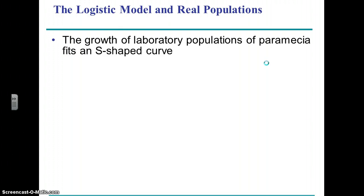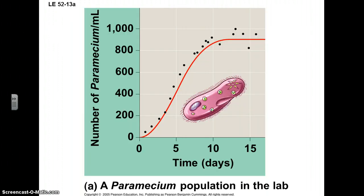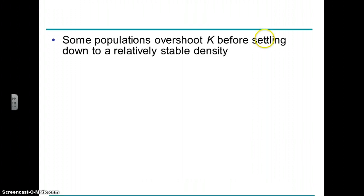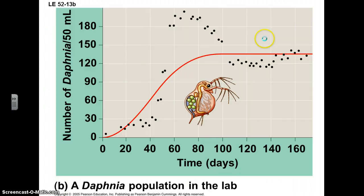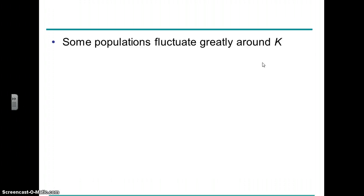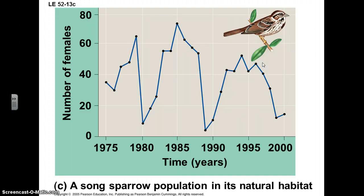Sometimes populations exhibit this nice S-shaped curve. Other times they can overshoot and be brought back down due to limiting factors. And sometimes they just bounce around with no real stability to the population size.